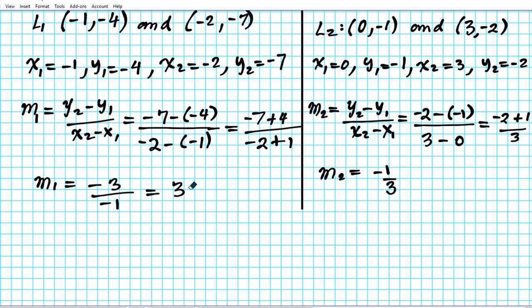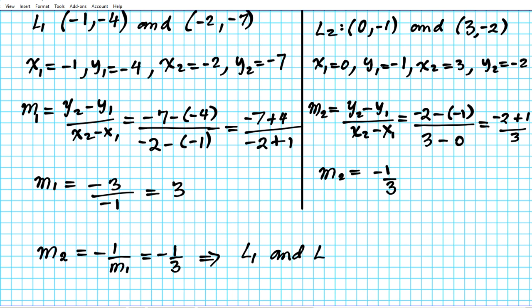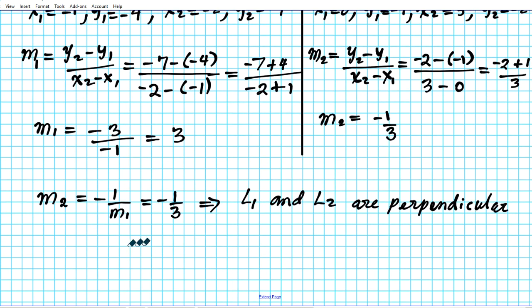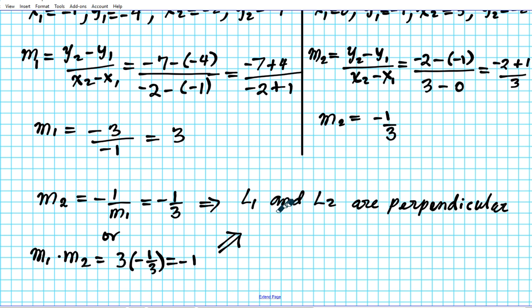We can see that m2 is the negative reciprocal of m1, which shows that the two lines are perpendicular. The negative reciprocal of m1 equals three gives negative one third, which equals m2. Another way to verify: m1 times m2 equals three times negative one third equals negative one, which also implies that l1 and l2 are perpendicular. Either proof is sufficient to show perpendicularity.